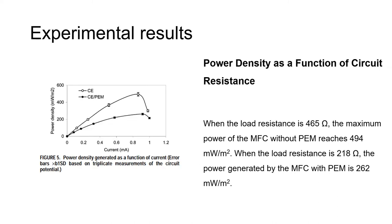Next, power density as a function of circuit resistance. To determine what load resistance would produce the maximum power density, the circuit resistance was varied from 150 to 5,000 ohms with glucose as the substrate. When the load resistance is 465 ohms, the maximum power of the microbial fuel cells without proton exchange membrane reaches 494 milliwatts per square meter. When the load resistance is 218 ohms, the power generated by microbial fuel cells with proton exchange membrane is 262 milliwatts per square meter.